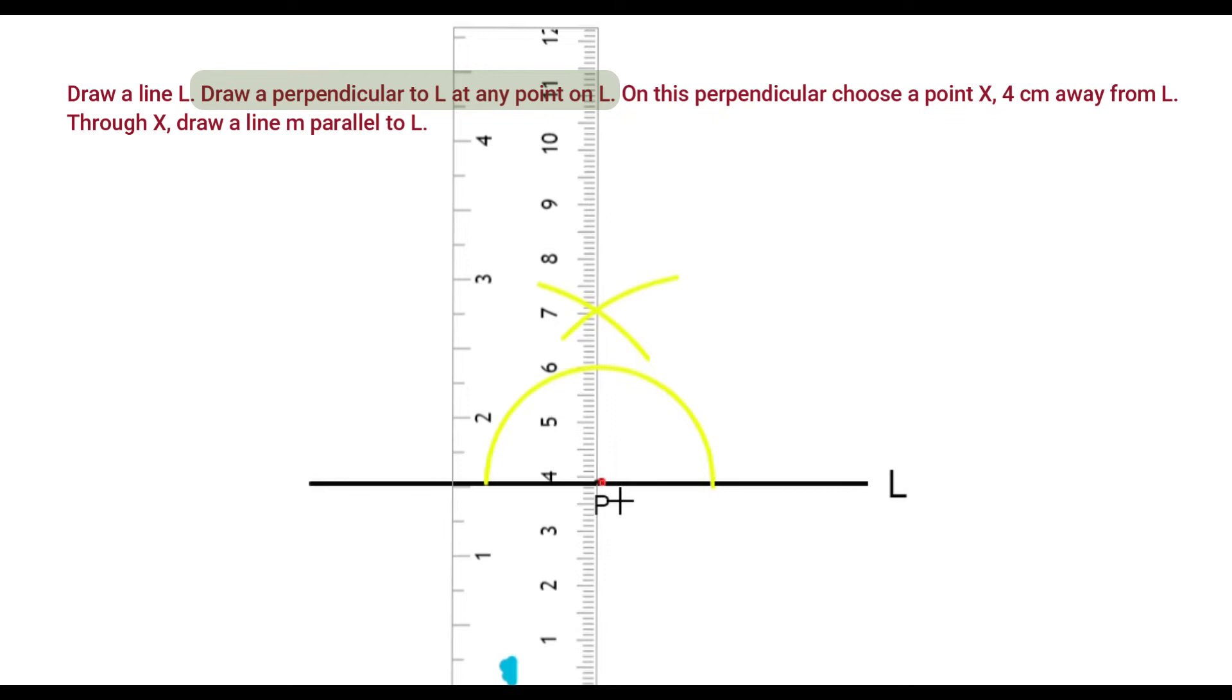Draw a line that joins the intersecting point and P. This is the perpendicular line.